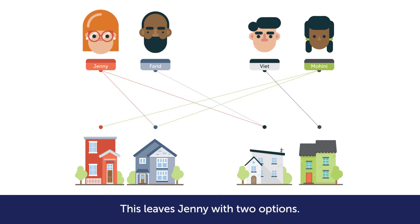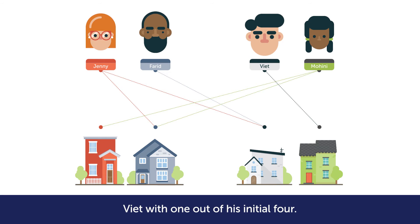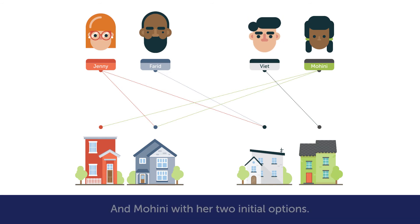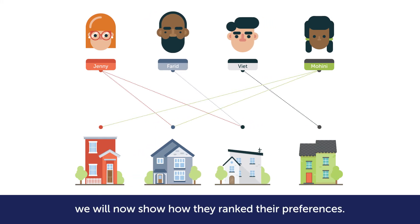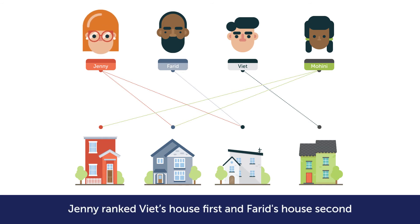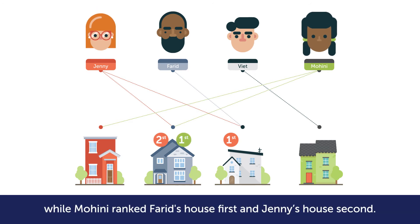This leaves Jenny with two options, Varid with his only preferred option, Viet with one out of his initial four, and Mahini with her two initial options. As Jenny and Mahini still have multiple options, we will now show how they ranked their preferences. Jenny ranked Viet's house first and Farid's house second, while Mahini ranked Farid's house first and Jenny's house second.